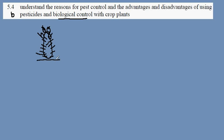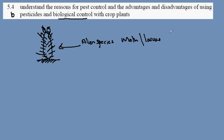The cactus started to cover a good deal of agricultural land and it was necessary to get rid of it. There was no natural herbivore or predator of the cactus in Australia, so it was necessary to introduce an alien species from another country — a moth, specifically its larvae, which feeds on the cactus, known as Cactoblastis. This moth was introduced, had no competitors, and was able to eat away at the cactus and remove it from the agricultural land of Australia.